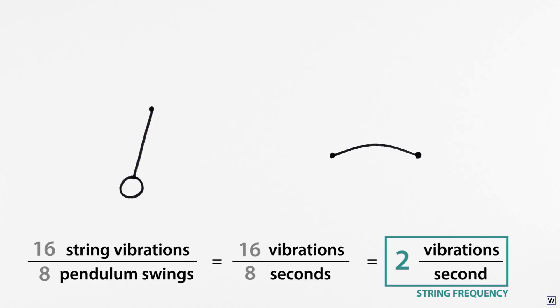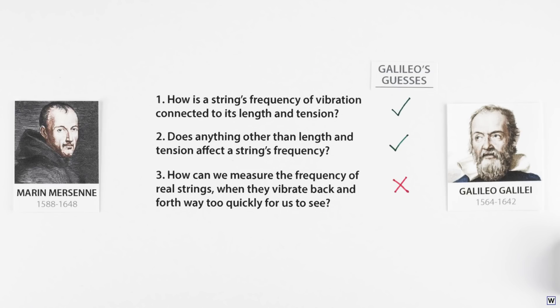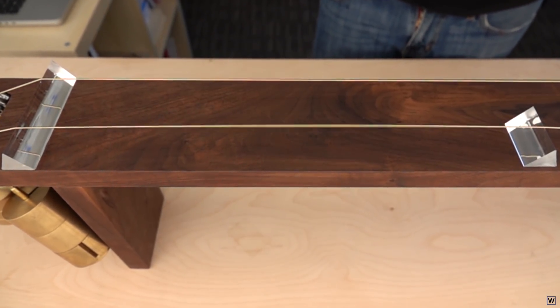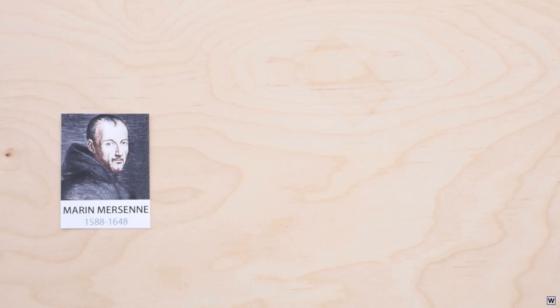In theory, this is a great way to measure the frequency of a vibrating string. But we still haven't cracked Galileo's central problem here. The vibrating string moves back and forth way too quickly for us to see. So how did Mersenne solve this problem?